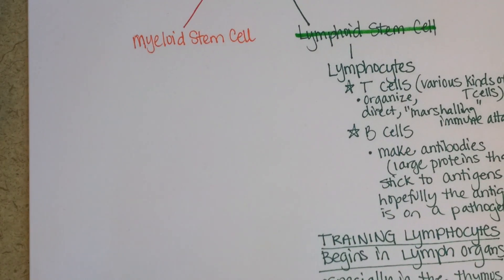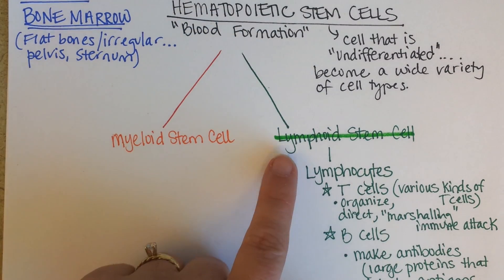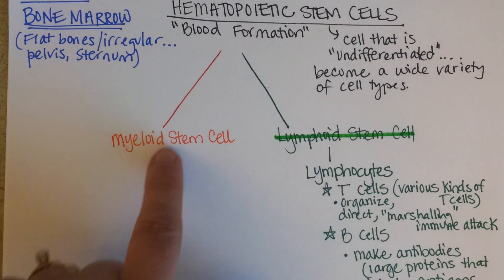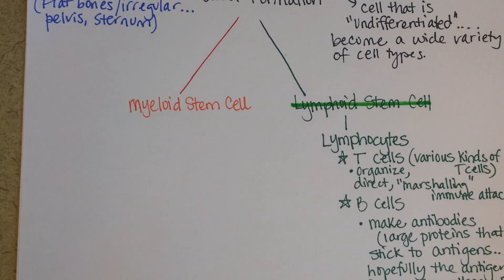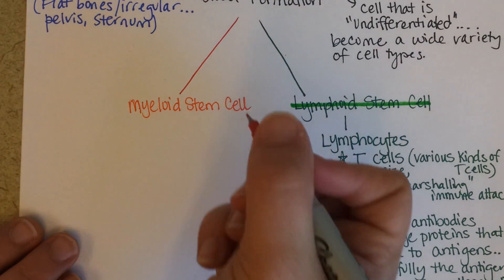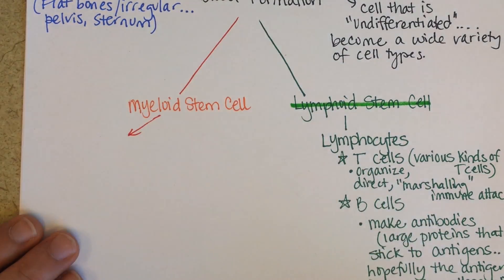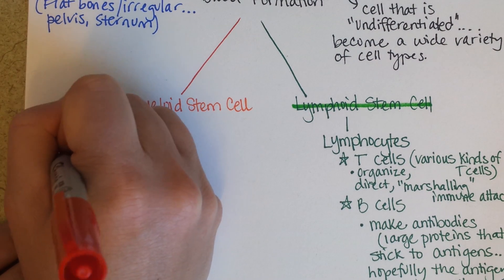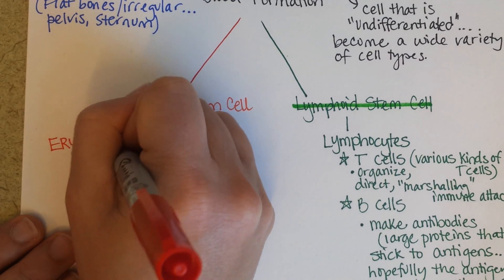That's one pathway — hematopoietic stem cells differentiating into lymphoid stem cells, all of which become either a T or a B cell. Now let's look at the myeloid stem cell line. This can further differentiate into either an erythropoietic stem cell — you can hear 'erythro' in there, meaning it will make red blood cells — or the other kinds of white blood cells.